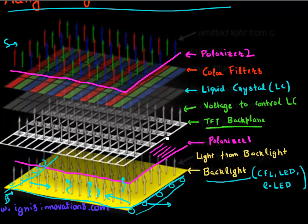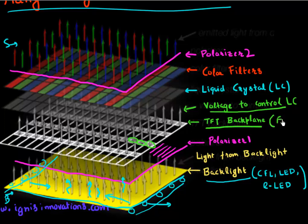The TFT backplane is essentially a set of transistors which apply voltage to the liquid crystal layer and control each of the individual pixels of the LCD. The area covered by transistors will block some light. There's an important metric called the fill factor, which determines how much of this area on the backplane is blocked by the thin film transistors. That degrades the overall efficiency of light, or the percentage of light that can pass through.